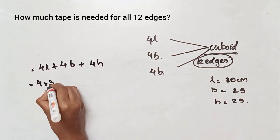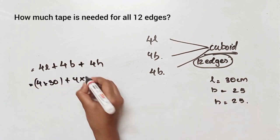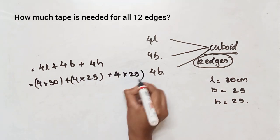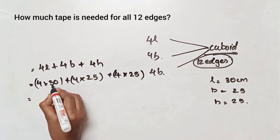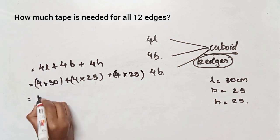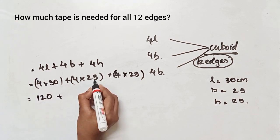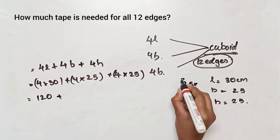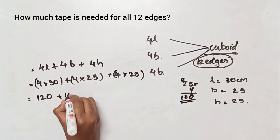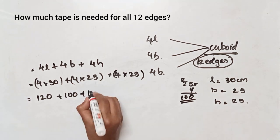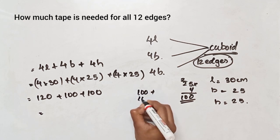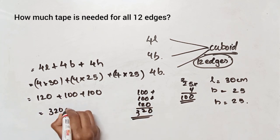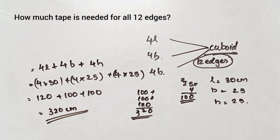With length 30 cm, breadth 25 cm, and height 25 cm: total edges = 4 × 30 + 4 × 25 + 4 × 25. That is 120 plus 100 plus 100, equal to 320 cm.